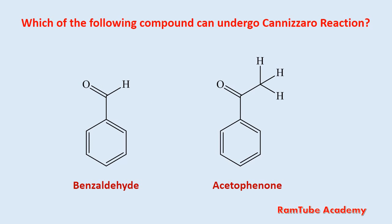First, answer one question: which of the following compounds can undergo the Cannizzaro reaction? Remember, the Cannizzaro reaction is given by aromatic or aliphatic aldehydes which do not contain alpha hydrogen. So first, what is alpha carbon? The alpha carbon in organic molecules refers to the first carbon atom that attaches to a functional group such as a carbonyl.